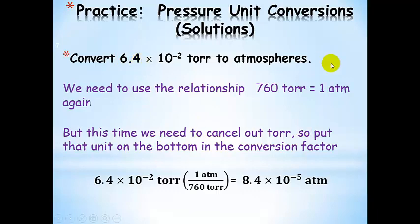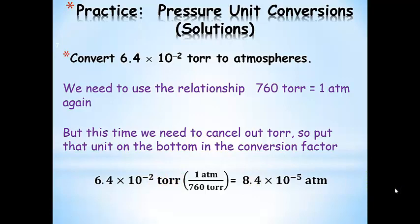Now let's go the other direction. We're going to take 6.4 times 10 to the negative 2 torr and convert that to atmospheres using the same relationship — 760 torr equals one atmosphere. This time we need to cancel out torr, so we put torr on the bottom. The torr cancel, and we end up with 8.4 times 10 to the negative fifth atmospheres.